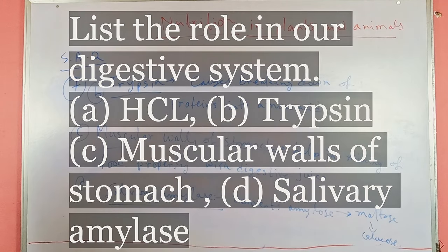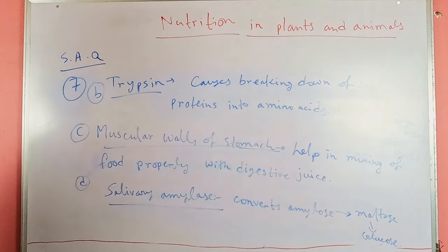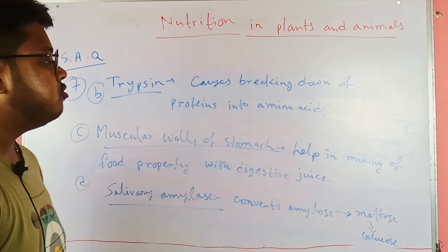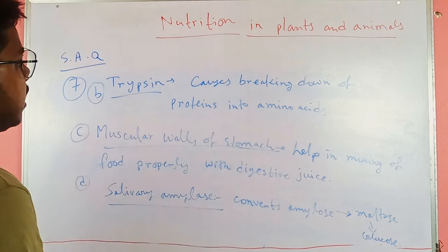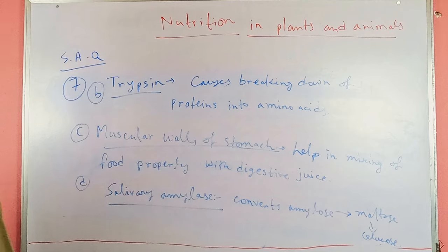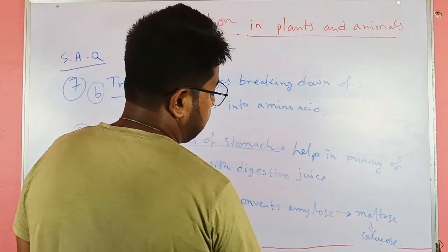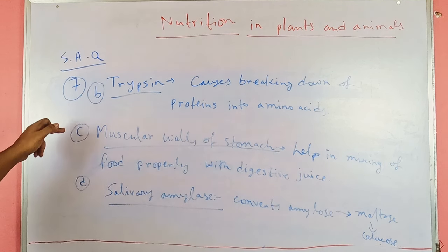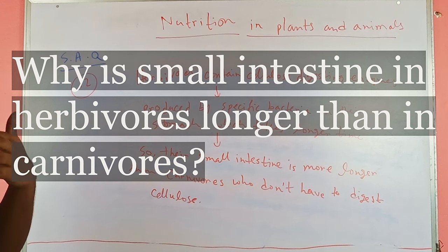Specific roles of digestive elements: Trypsin causes breaking down of proteins into amino acids during digestion. The muscular walls of the stomach help mix food properly with digestive juice to break down larger fat molecules by emulsification. Salivary amylase converts starch or food particles in the mouth into maltose, which is eventually converted into glucose.